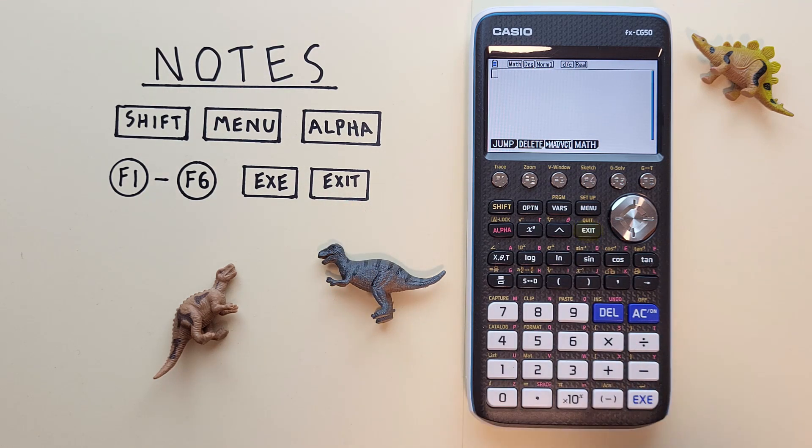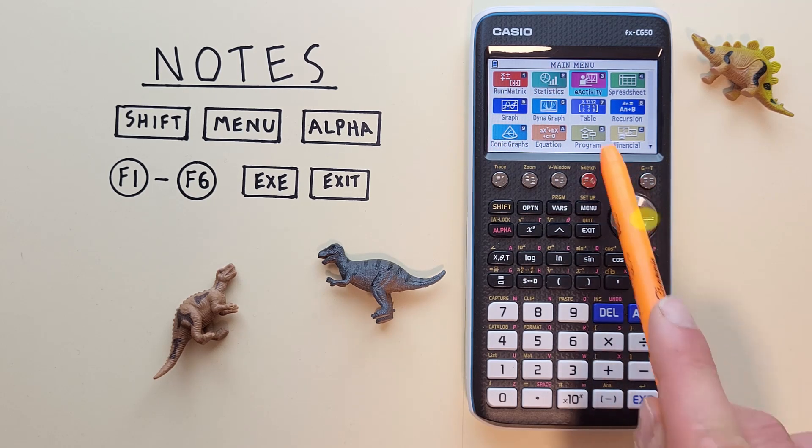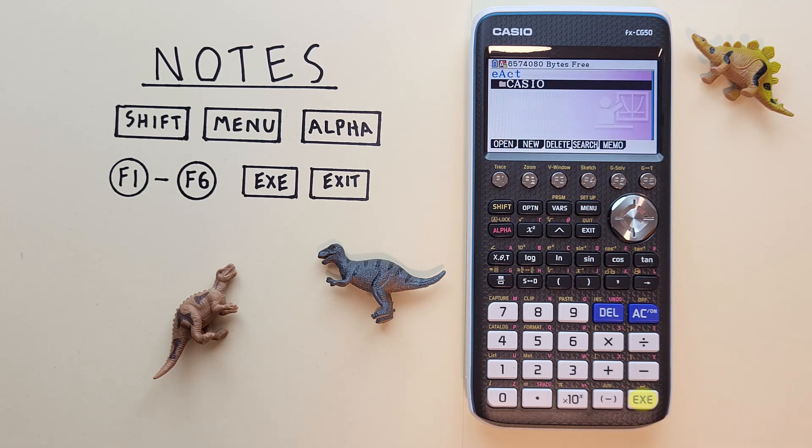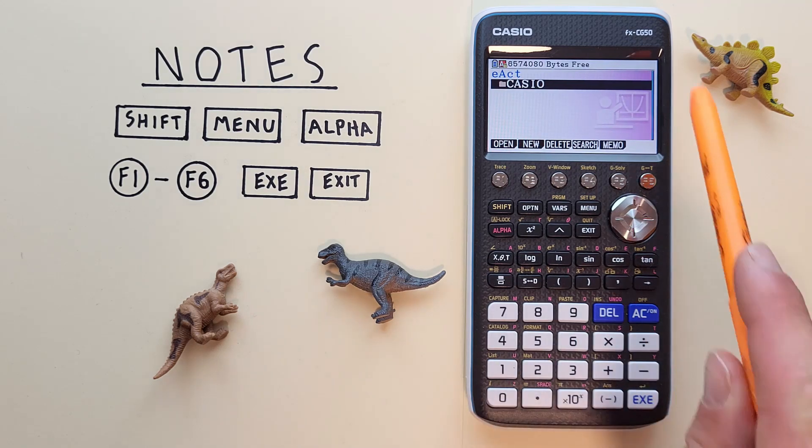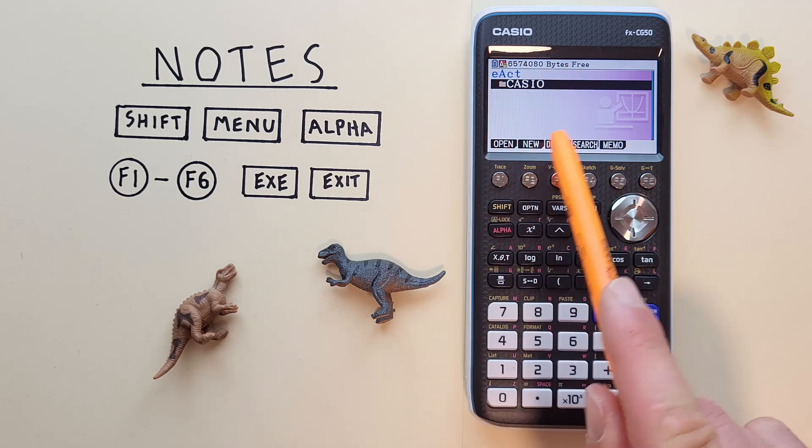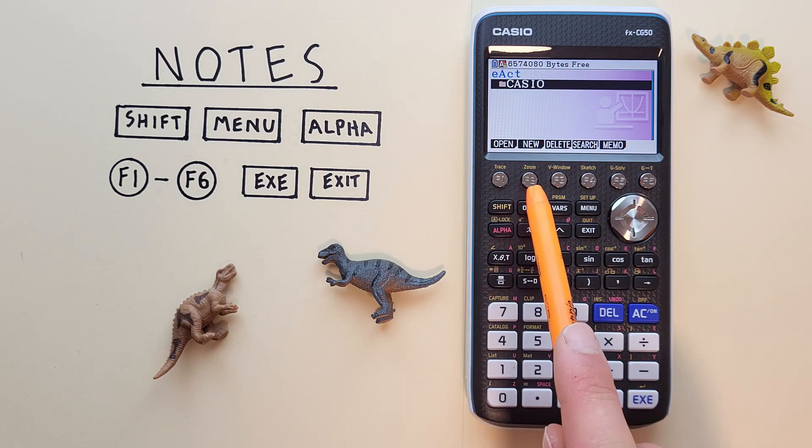To get to our notes first we have to go to the main menu, so we hit the menu key and then we scroll over to E activity and select that one with the EXE key. That brings us to this screen here. If we have notes already they'll be listed here. If we want to start a new one we hit F2 for new.